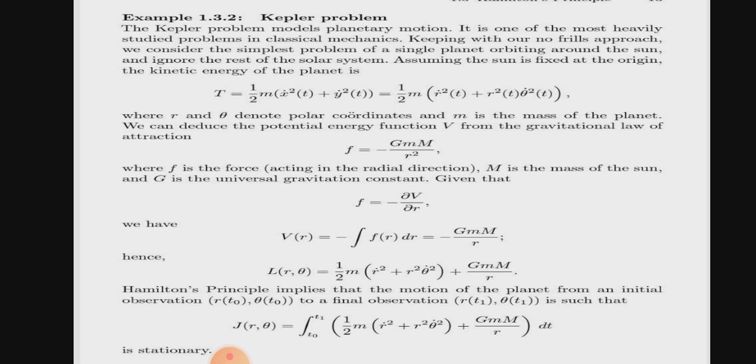And potential energy function F equals minus partial V over partial r, and we will integrate it with respect to r, so we will get V(r) equals minus GmM over r. This is potential energy. And now Lagrangian, we know that Lagrangian is equal to kinetic energy minus potential energy, so Lagrangian equals one half m times r dot squared plus r squared theta dot squared, which is kinetic energy, plus GmM over r, that is potential energy. Now Hamilton principle implies that the motion of the planet from an initial observation to a final observation is such that it is stationary.